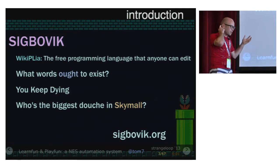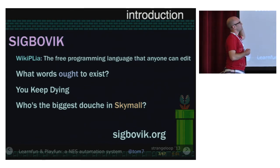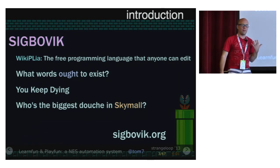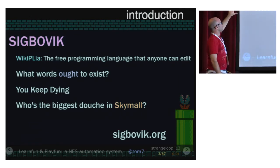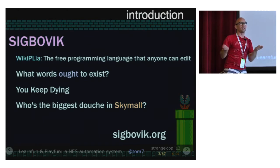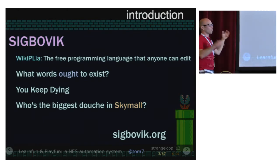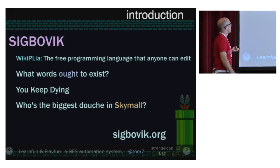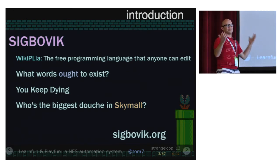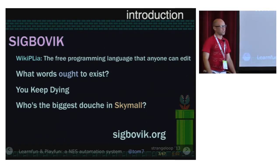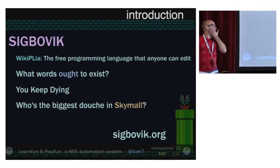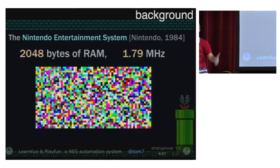I want to talk about SIGBOVIC. This work is not like real academic work — I just did it for the fun of the hack. SIGBOVIC is a conference we have every year at CMU. Some titles of former projects: Wikipedia, the free programming language that anyone can edit — it was a thing I really built. What Words Ought to Exist is sort of the philosophical follow-on to the last talk. You Keep Dying is a video game about dying a lot. And Who's the Biggest Douche in SkyMall applies machine learning techniques to figure out who is the douchiest of them all.